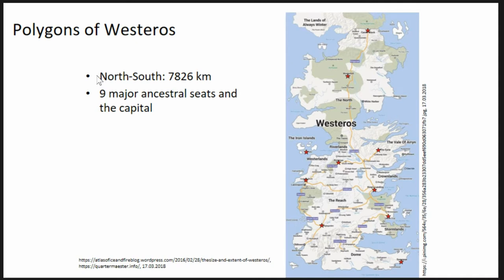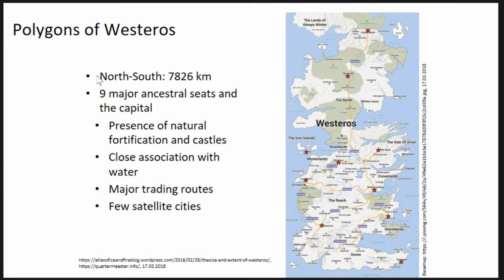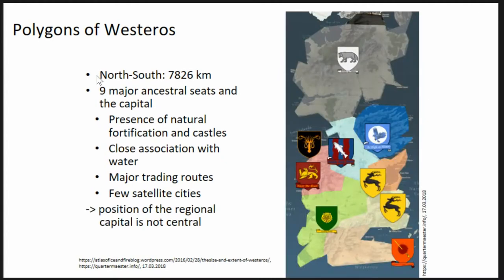Just a quick look at Westeros: people have estimated the scale. We have nine major ancestral seats plus the capital — the crown lands. You can immediately see that places like Oldtown are not an ancestral seat, so we don't get them. We see a presence of natural fortifications and castles for capitals, close association to water and major trading routes, and few satellite cities. Few satellite cities is a problem because that's what we usually use if we do modeling. The sigils show where the capitals are depending on their shape, and we see that the capital is not central — most archaeological and spatial models assume the most important part should be in the center.